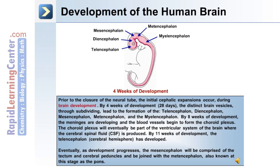And eventually, as development progresses, the mesencephalon will be comprised of the tectum, cerebral peduncles, and it will be joined with the metencephalon, also known at this stage as the pons.